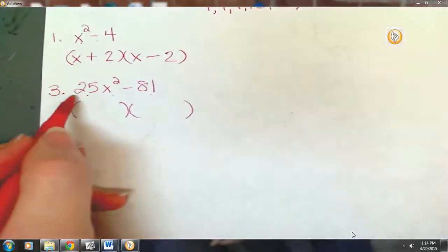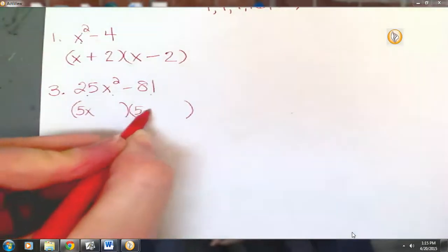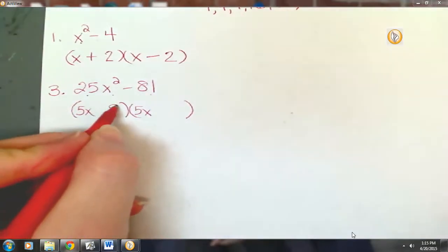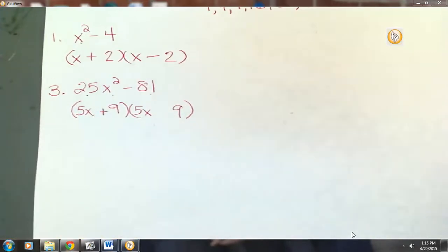So what's the square root of 25x squared? 5x. And the square root of 81? 9. So one parenthesis is going to be 5x plus 9. The other is going to be 5x minus 9.